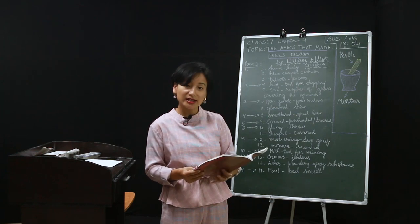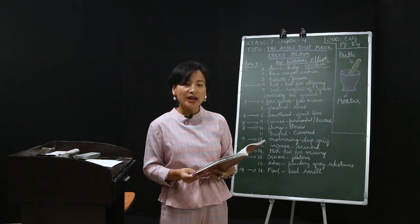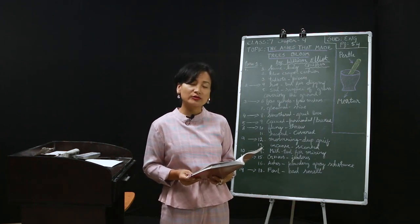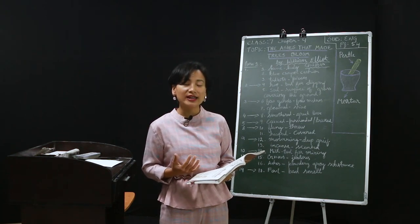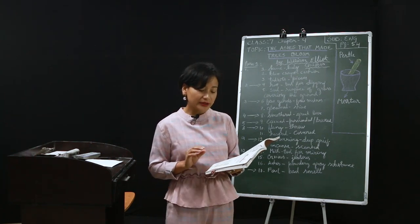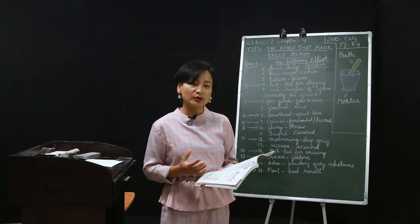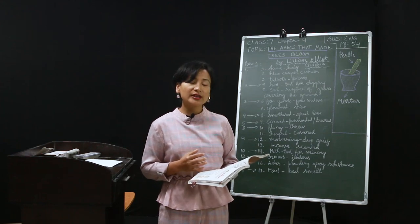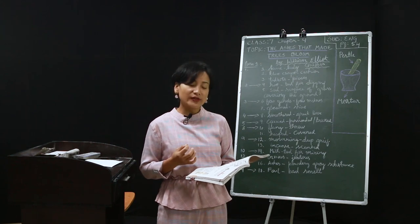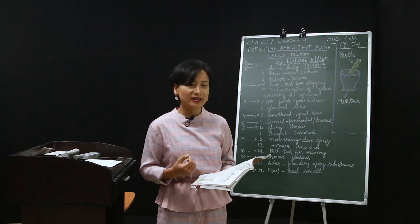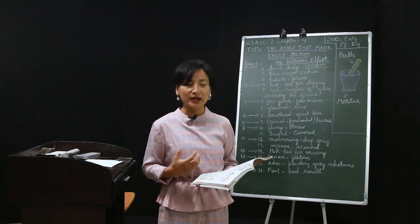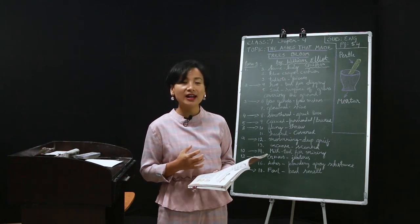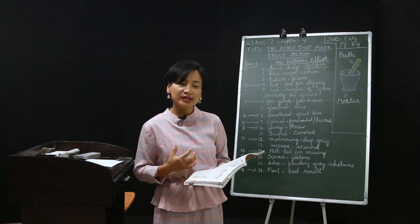In 19th century Japan there lived two old couples who did not have any children, but they had a pet dog named Myuko. Because they had no children, they loved this dog like anything, treating it with kindness as though it were their own child. The old woman made a blue crepe cushion for the dog to sleep on, they fed it bits of fish, and even fed it with their own chopsticks and rice. The dog loved its owners back as though it had a soul, like a human.